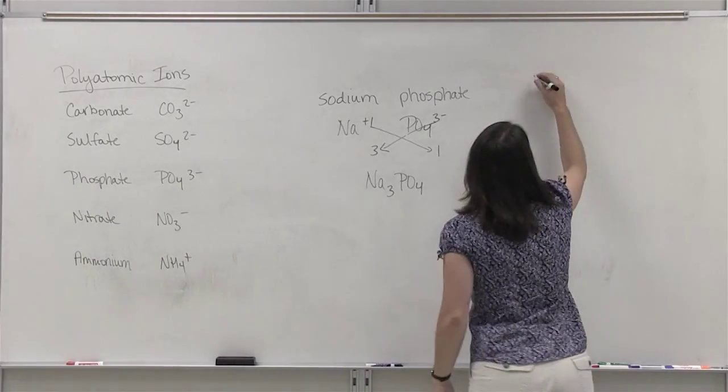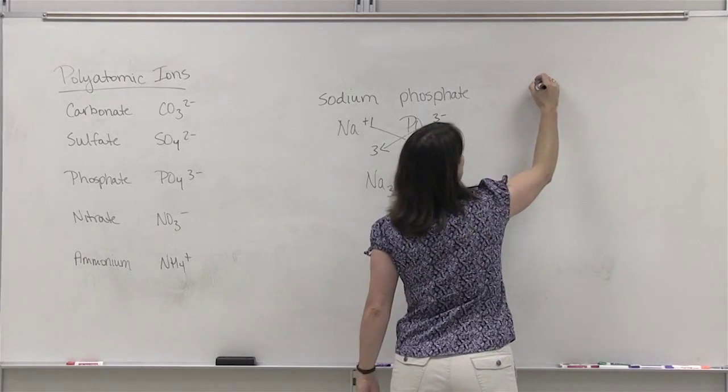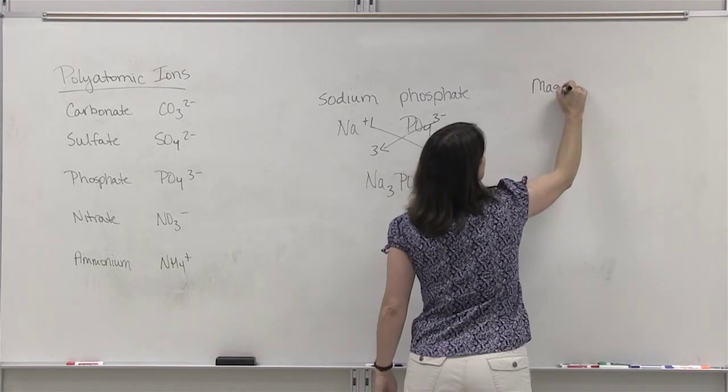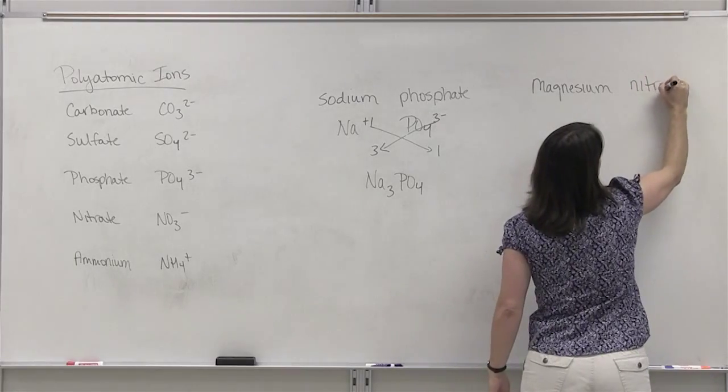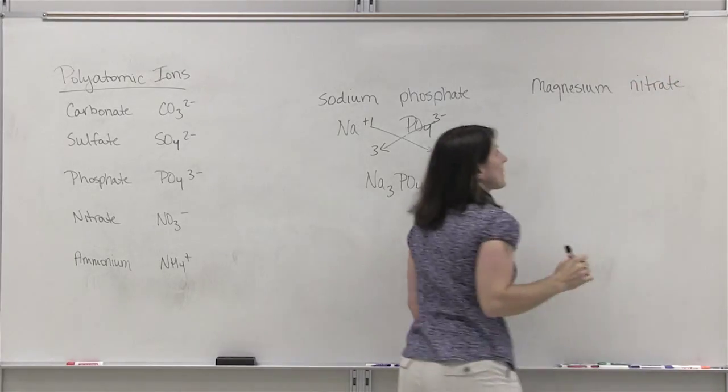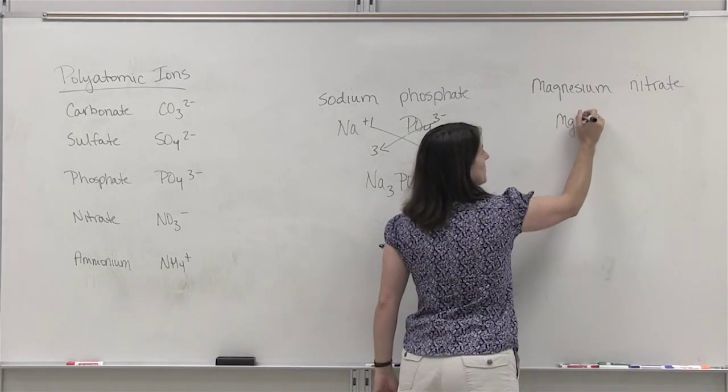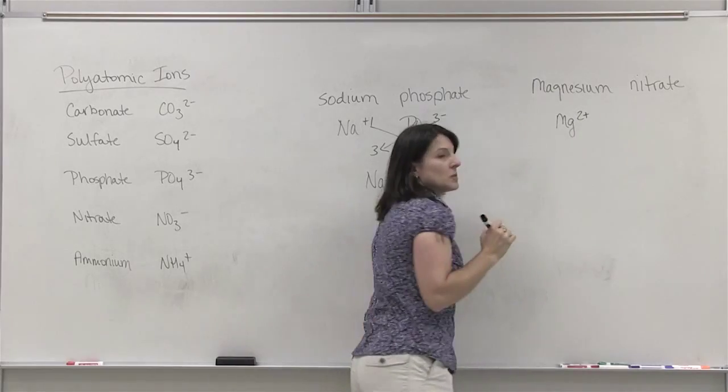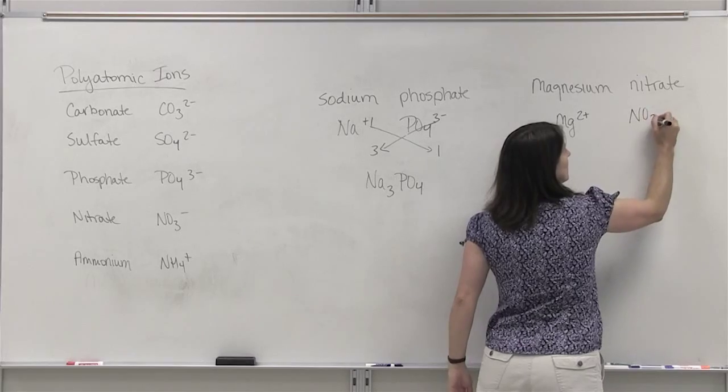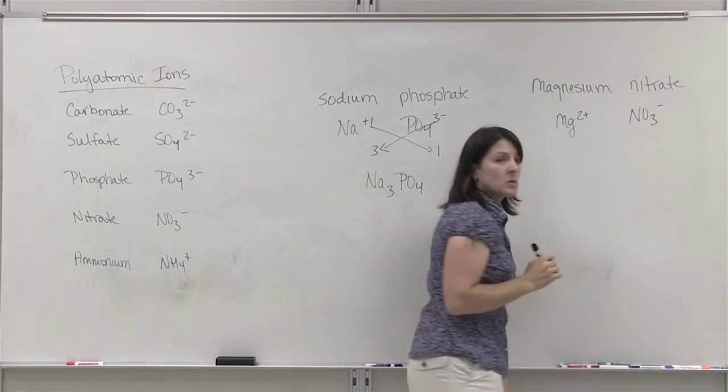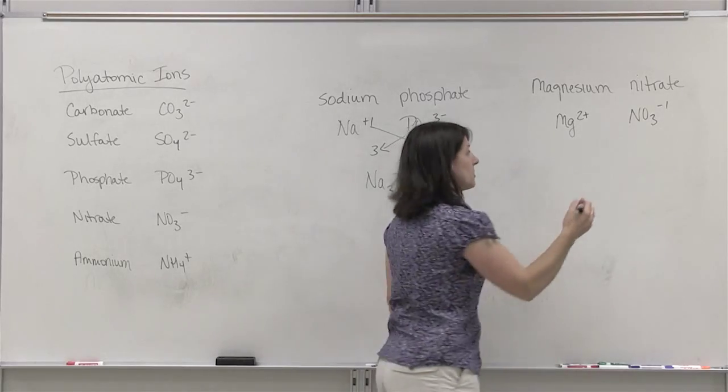Another example. Let's say we have magnesium nitrate. Magnesium, group 2A, so it's a 2 plus charge. Nitrate. NO3 with a minus 1 charge. I'll put the 1 there. Since they're different charges, we have to crisscross.